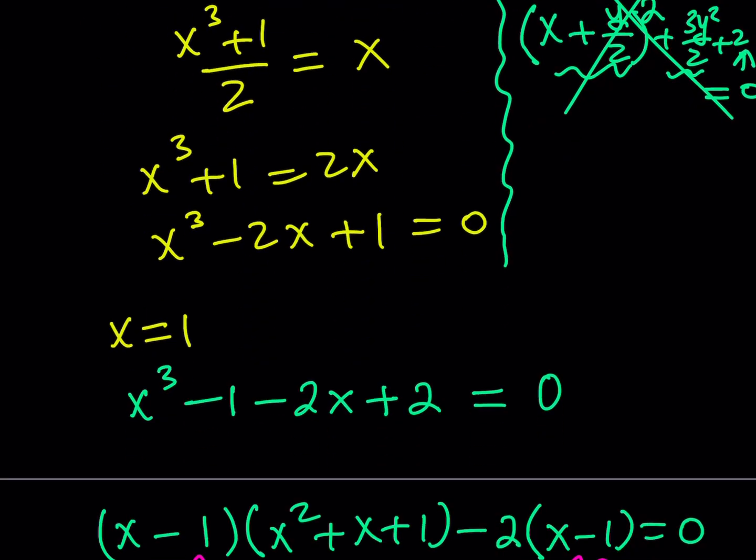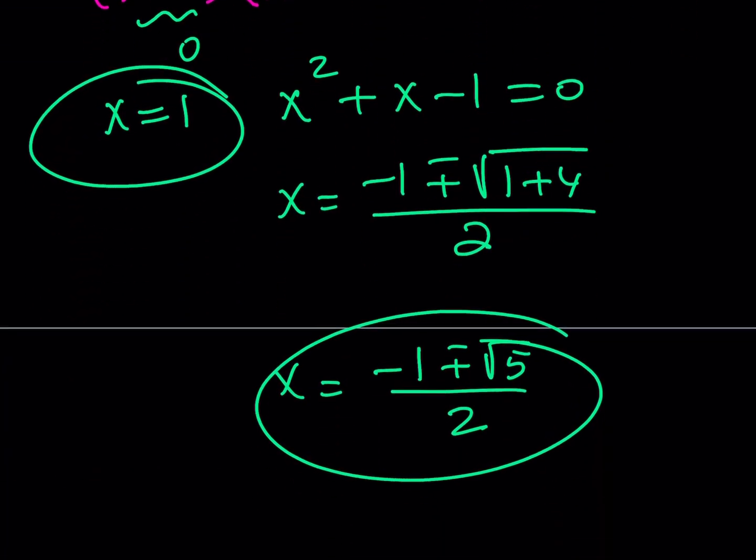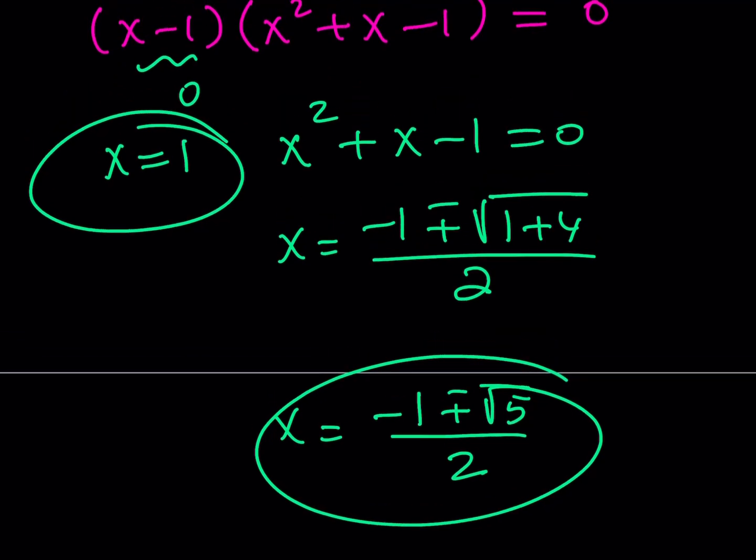And here they are. x equals 1, x equals negative 1 plus minus root 5 over 2. And this brings us to the end of this video. Thank you for watching. I hope you enjoyed it. Please let me know. Like, comment, and subscribe. I'll see you tomorrow with another video. Until then, be safe, take care, and bye-bye.